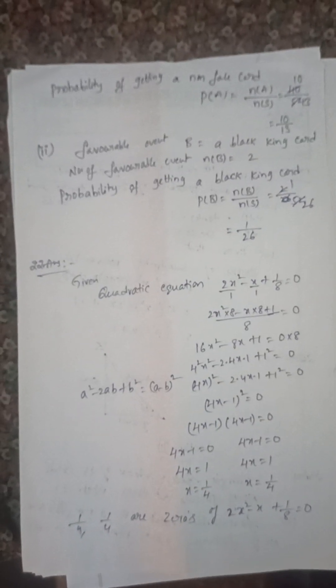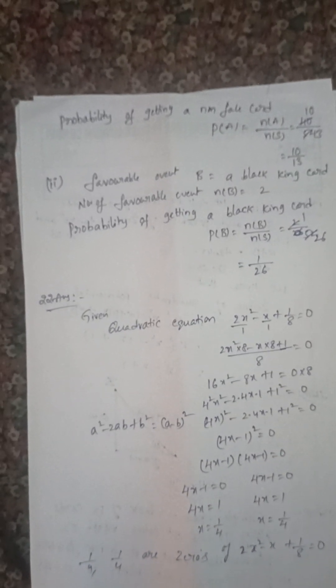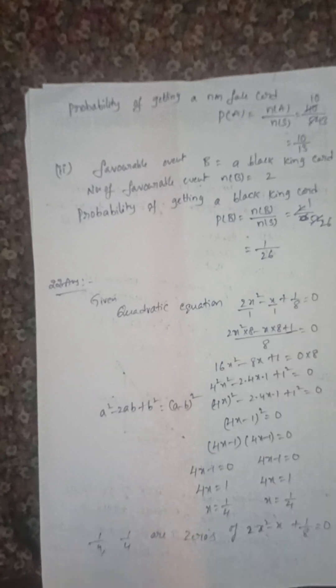Problem of non-face cards: that is 40 by 52, which is 10 by 13. Face cards is 12, non-face cards is 40. Next, black king card: 2 by 52, that is 1 by 26.